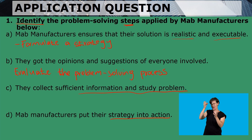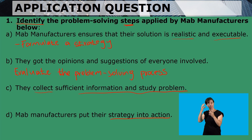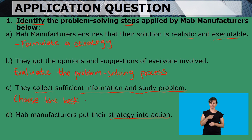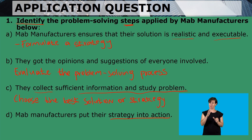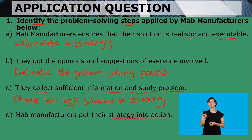The third one says they collect sufficient information and study the problem. They've collected enough information, so they are now ready to make their choices. The answer is: choose the best solution or strategy. The keyword is 'the best solution' — we don't just make any choice, we need to ensure that the solution chosen is the best.